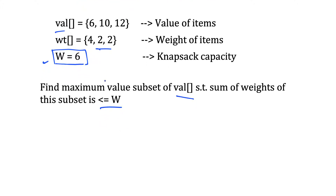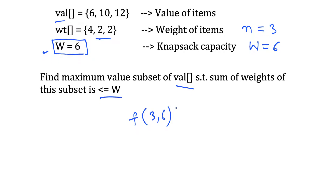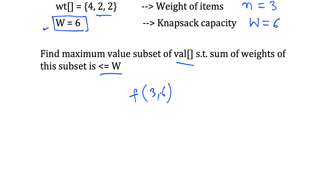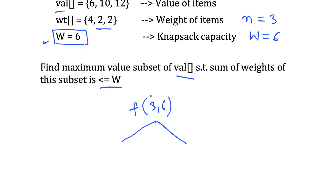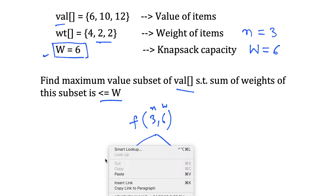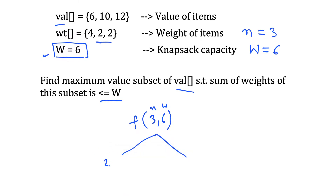Let's try to break this problem into sub-problems. We have n equal to 3 items and W equal to 6. We will either pick the last element or we will not pick it, so we can break it into two sub-problems. The first number represents the number of items and the second represents the weight. If we ignore the last item then we have two items remaining with the same weight.